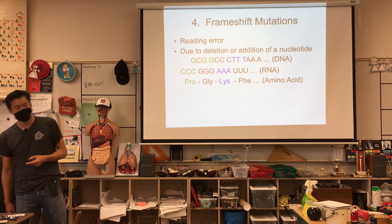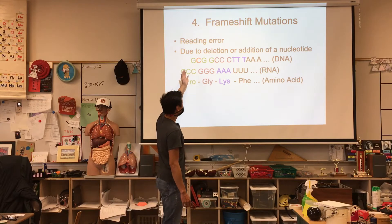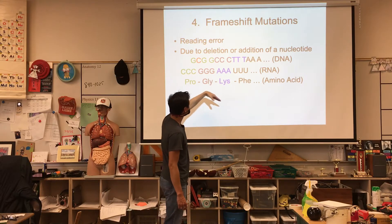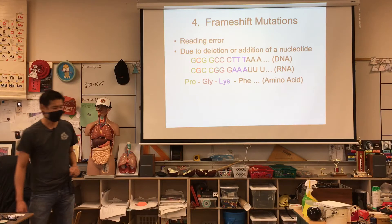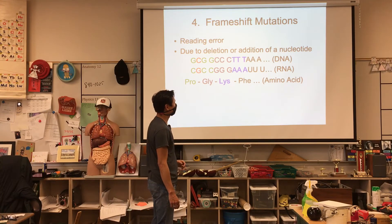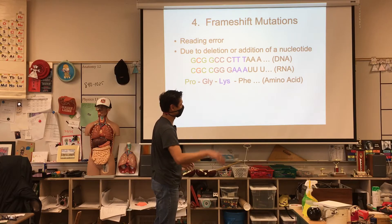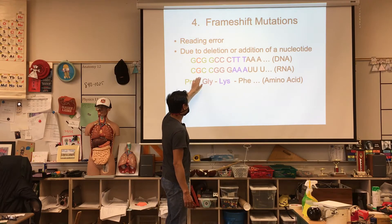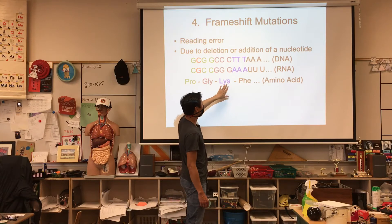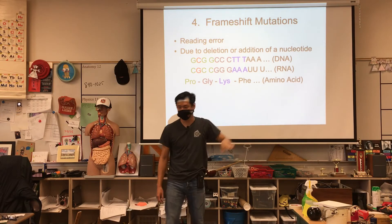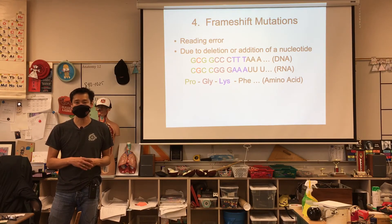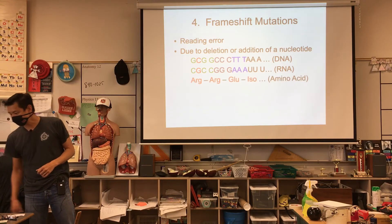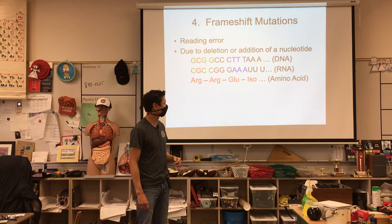A frameshift mutation is where we delete or add a nucleotide. In this case, we're going to insert an extra C in red. As a result, everything gets shifted down by one, so now when RNA polymerase makes the mRNA sequence, it reads CGC CGG GAA AUU and so on. CGC does not code for proline, CGG does not code for glycine, GAA not lysine, and AUU is not phenylalanine. This one insertion causes a downstream shift of amino acids, so each codon is now different — giving us arginine, arginine, glutamate, and isoleucine.